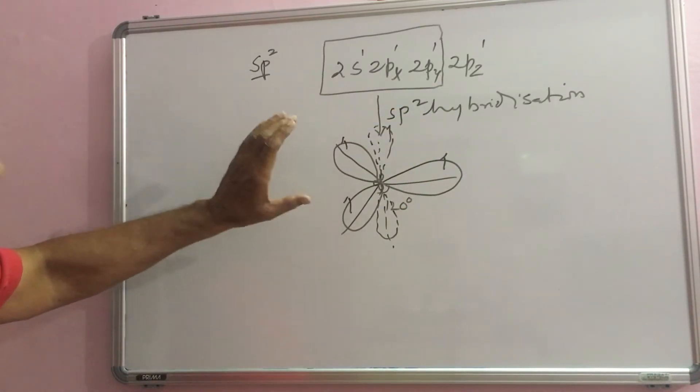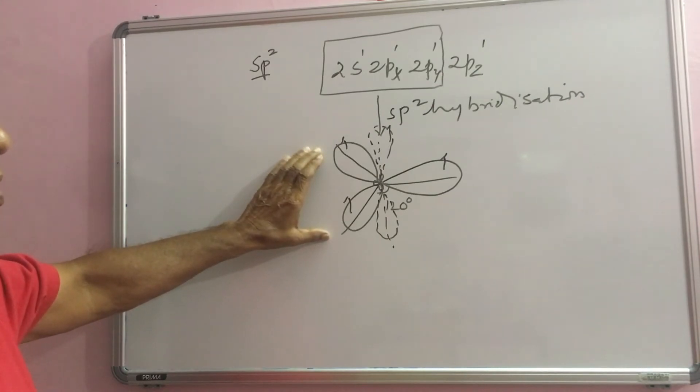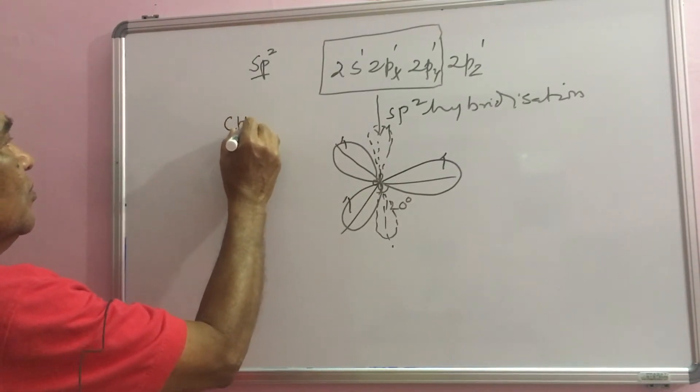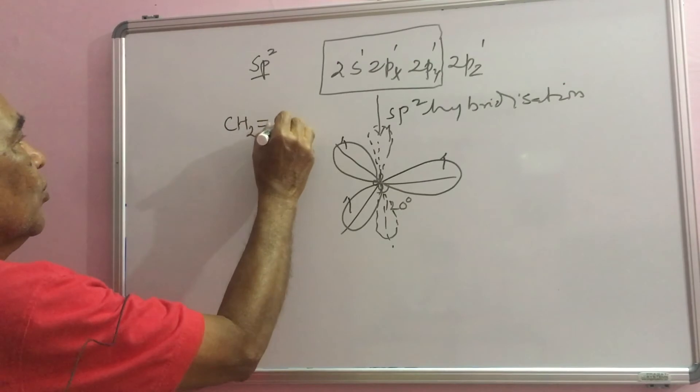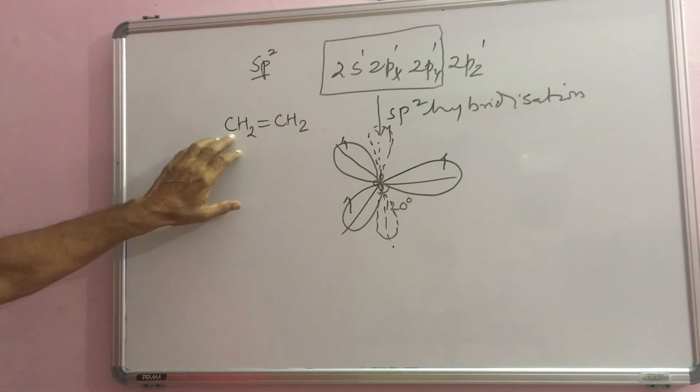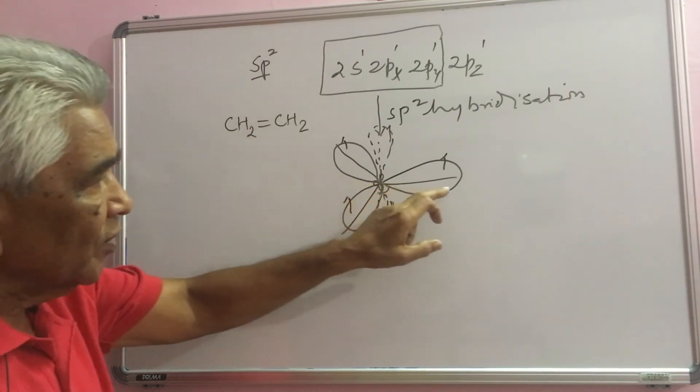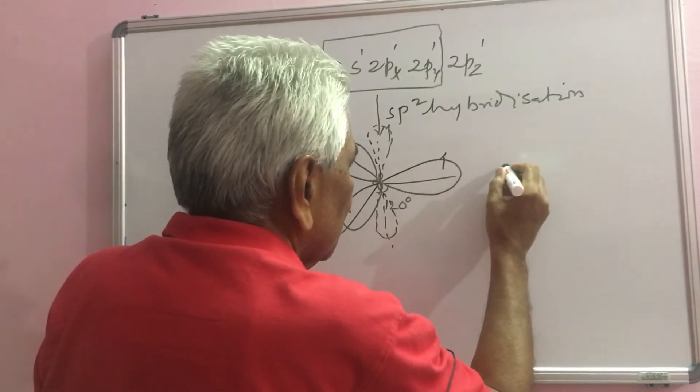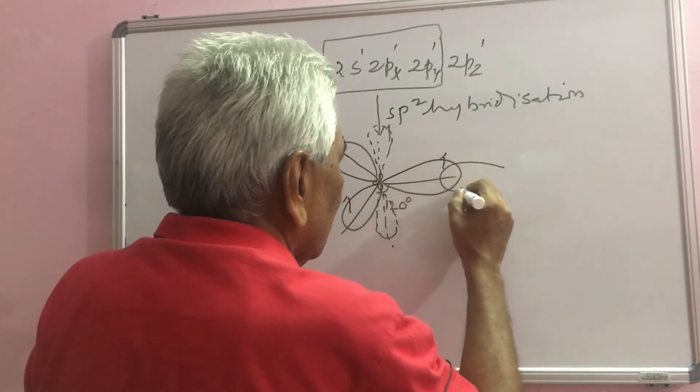This is now ready for bond formation. The simplest case is ethylene, C double bond C. Both carbons are sp2 hybridized. When this comes in close proximity with another carbon atom, similarly sp2 hybridized...